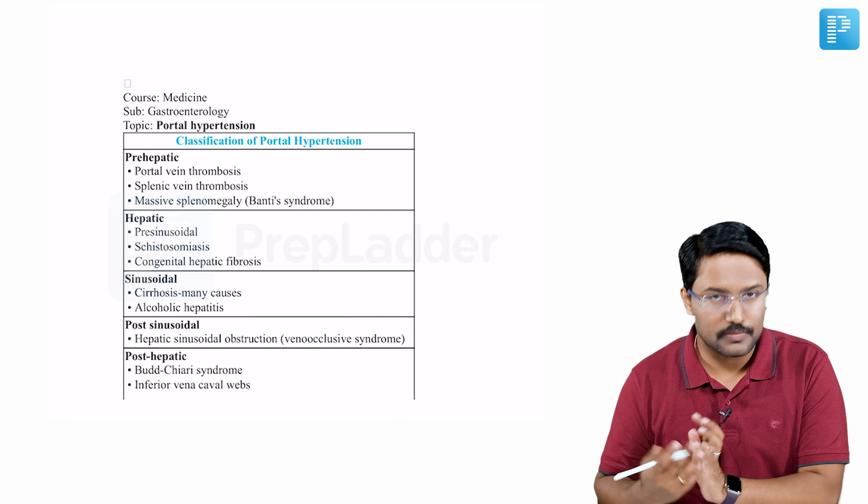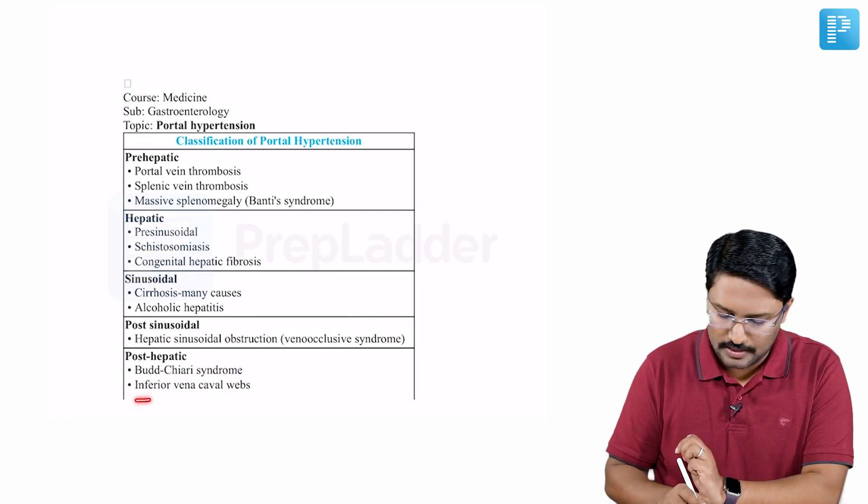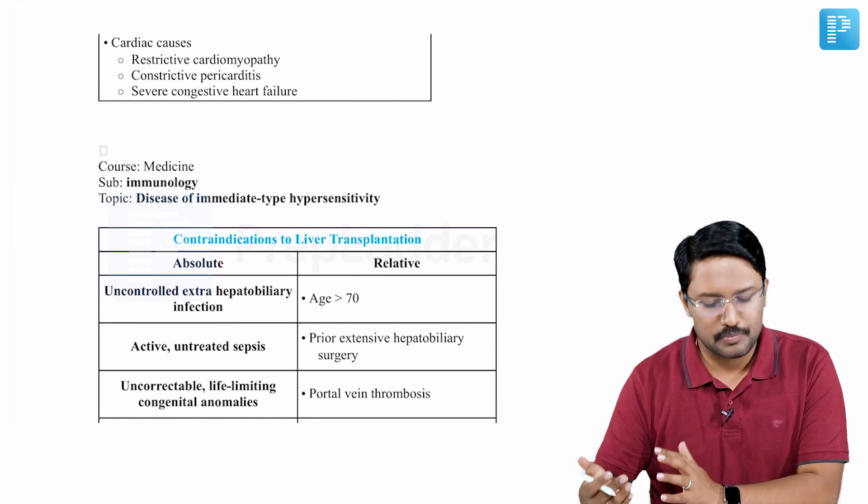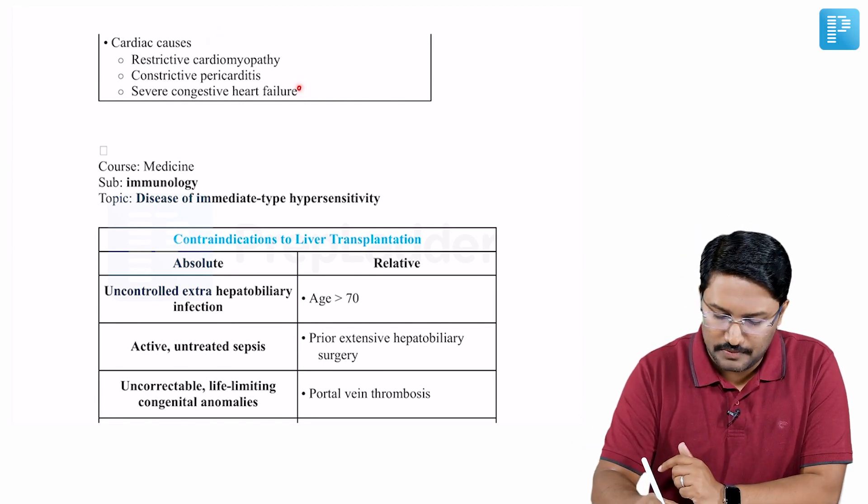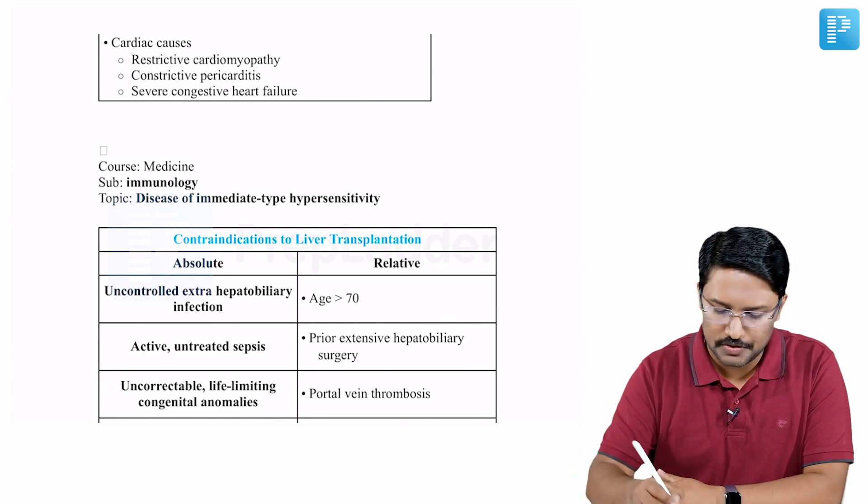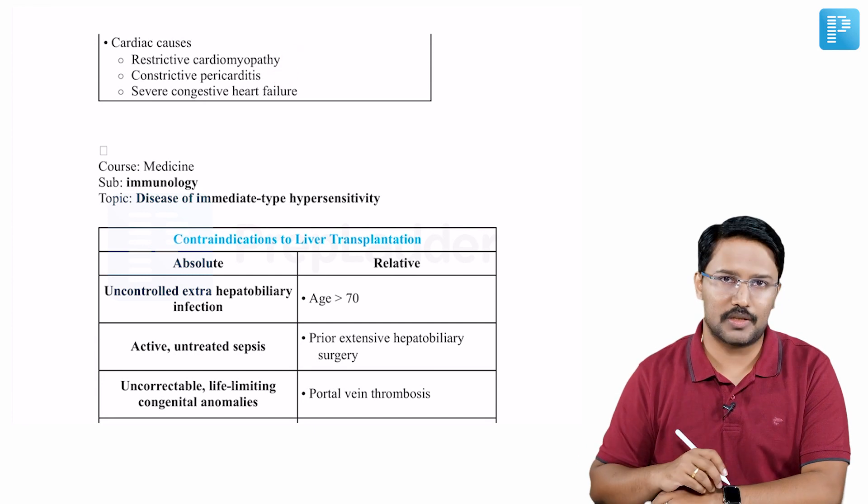Post-hepatic we have Budd-Chiari syndrome - we are all very much familiar with that - inferior vena cava webs, and apart from that, certain cardiac causes can be responsible. Like we already know, severe congestive heart failure causing congestive hepatomegaly and then liver dysfunction, constrictive pericarditis, and restrictive cardiomyopathy.